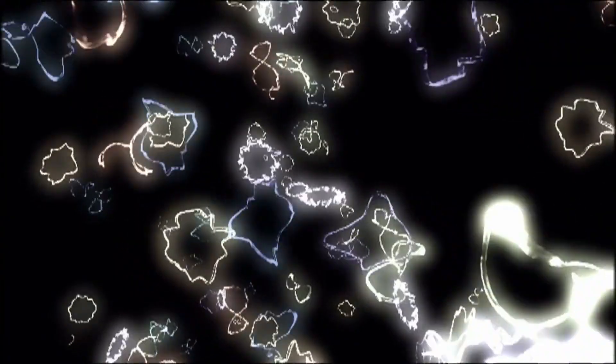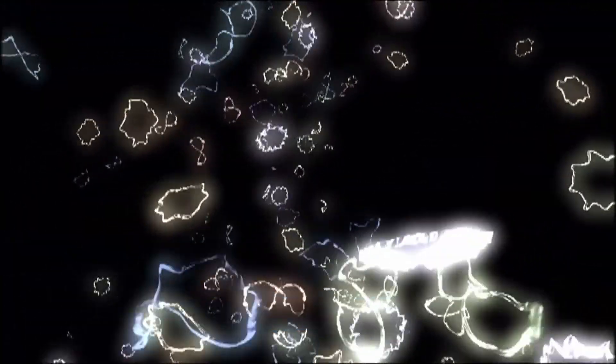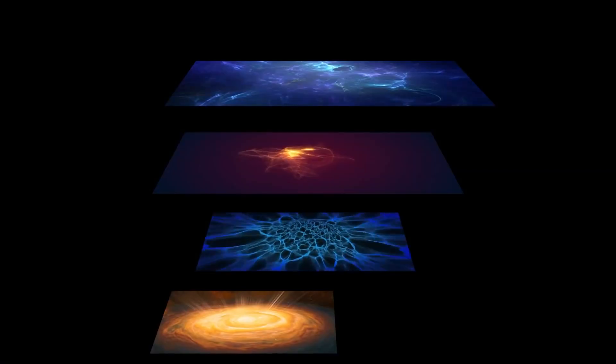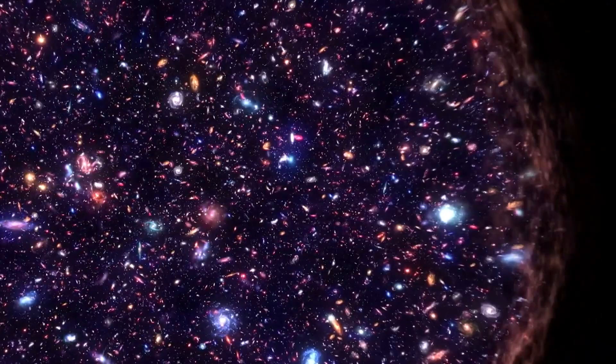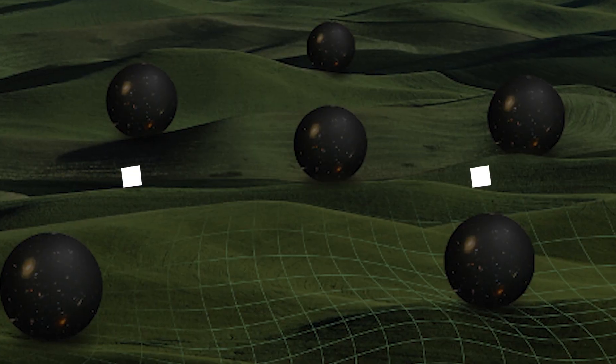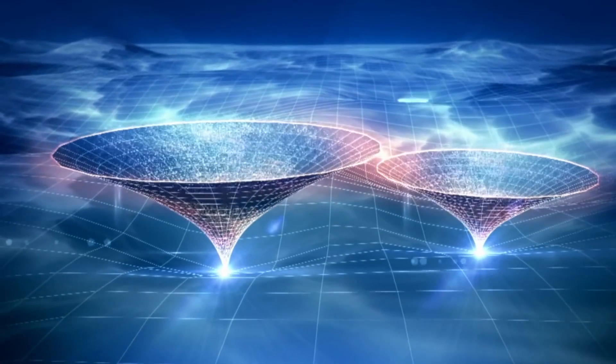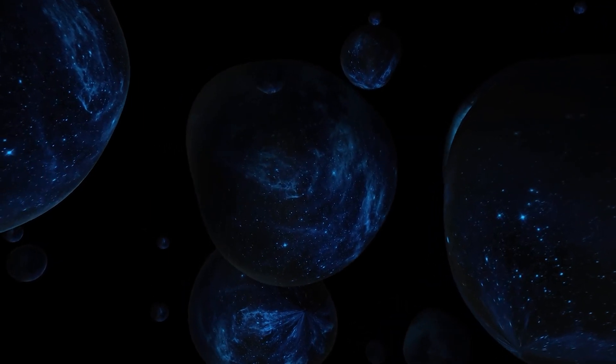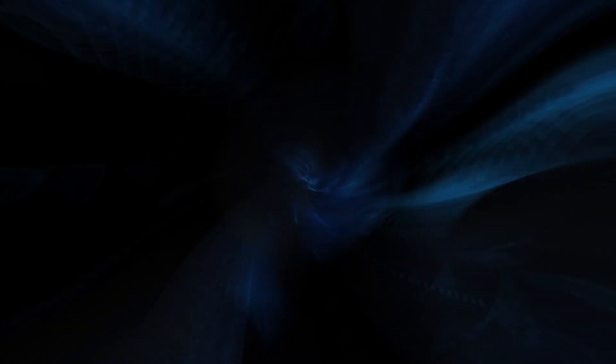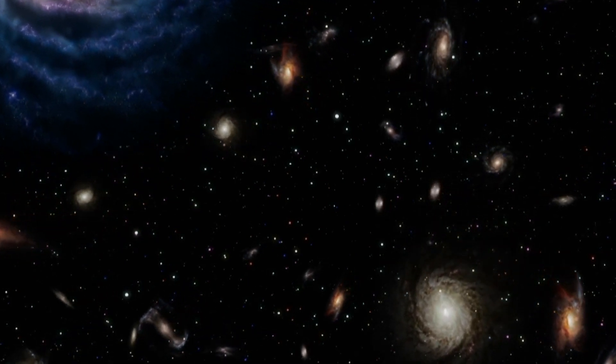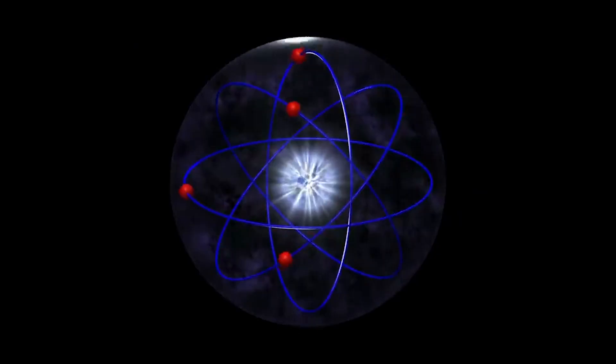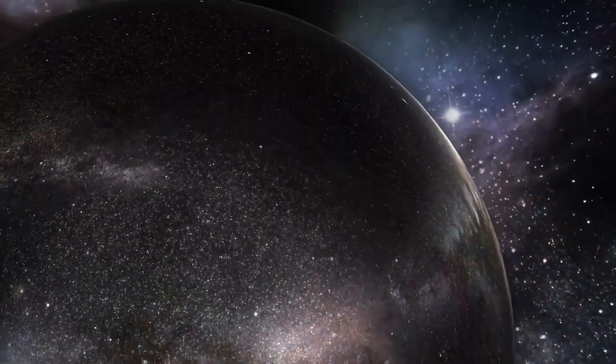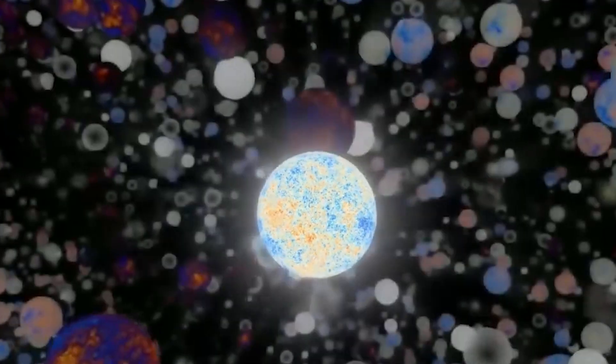The brane multiverse: This idea arises from string theory, where our universe is like a three-dimensional brane embedded in a higher-dimensional space. Other branes could exist alongside our universe, each representing its own universe with distinct physical laws. The landscape multiverse: According to this concept, there is a vast landscape of different possible vacuum states in the universe. Each of these states corresponds to a universe with its own set of physical constants. The quantum multiverse, many worlds: Based on the many worlds interpretation of quantum mechanics, every quantum event that has multiple possible outcomes results in the creation of multiple universes, each corresponding to a different outcome.